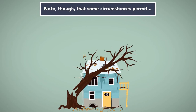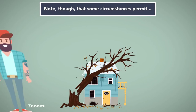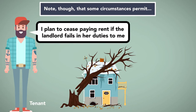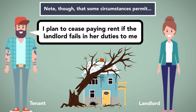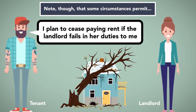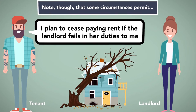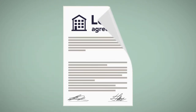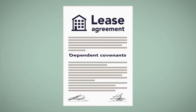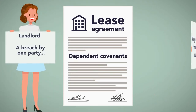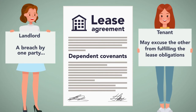Note, though, that some circumstances permit the tenant to cease paying rent if the landlord fails in her duties to the tenant. In this sense, lease agreements are considered dependent covenants, so that a breach by one party may excuse the other from fulfilling the lease obligations.